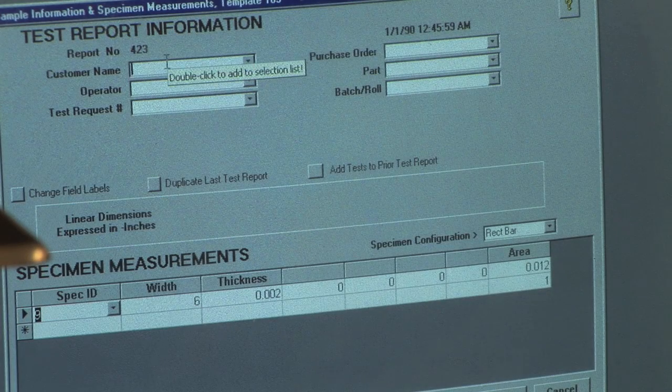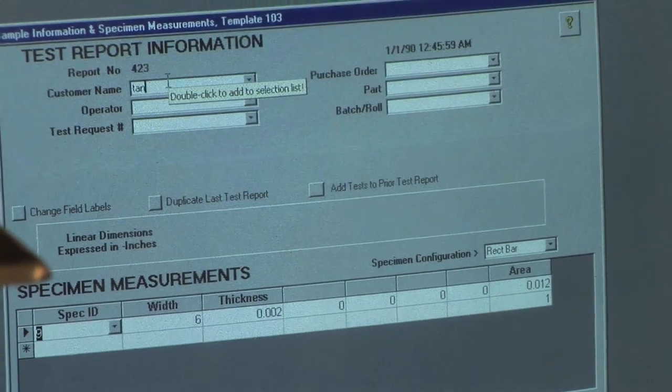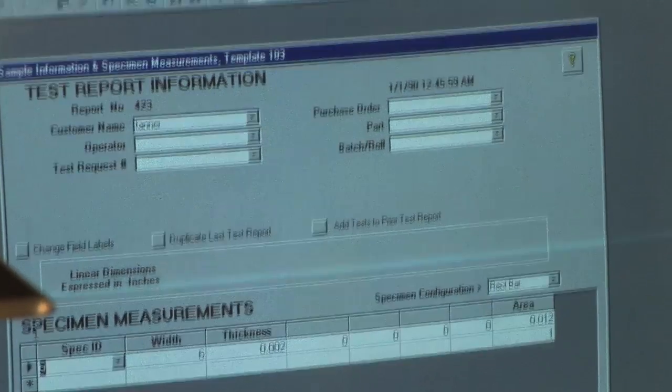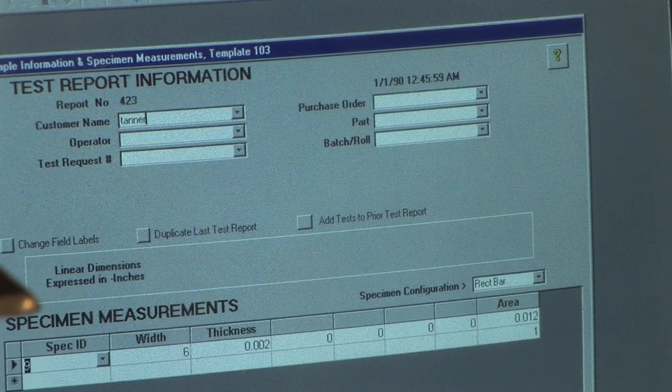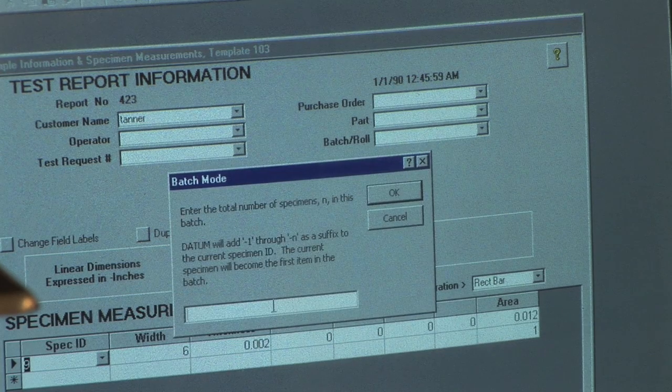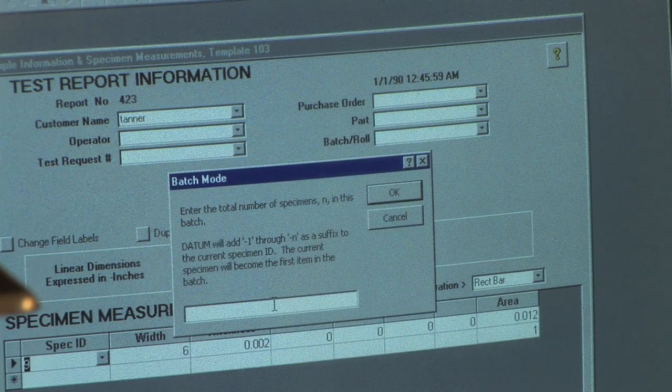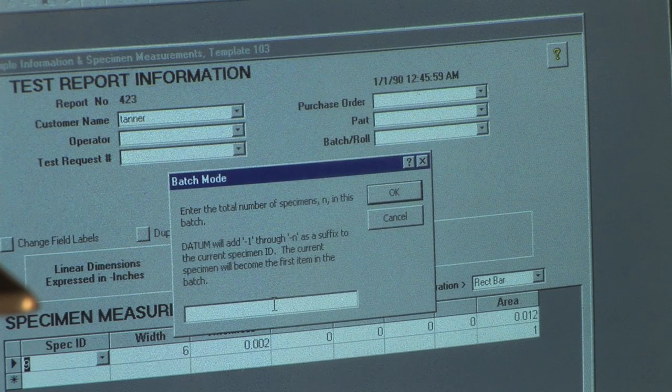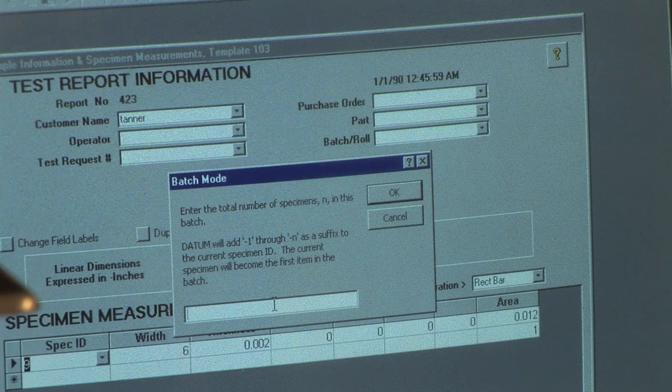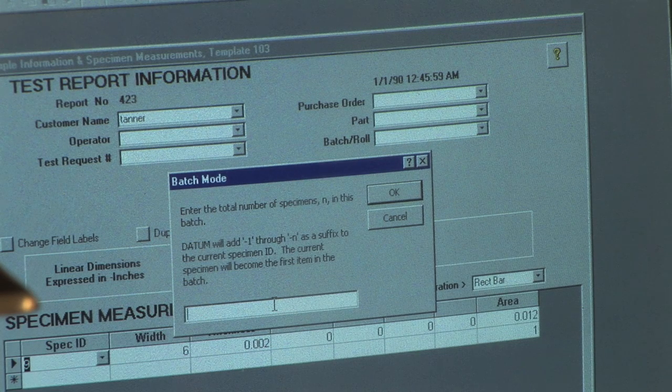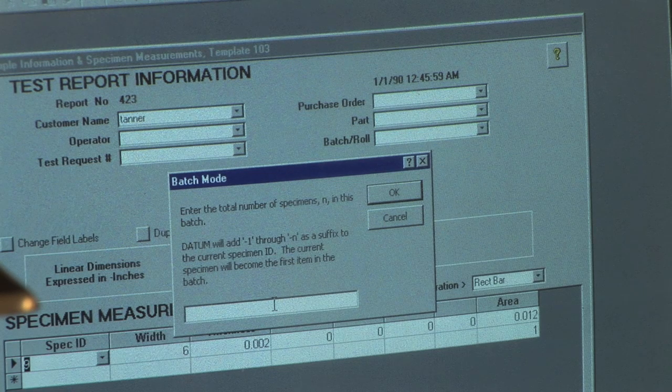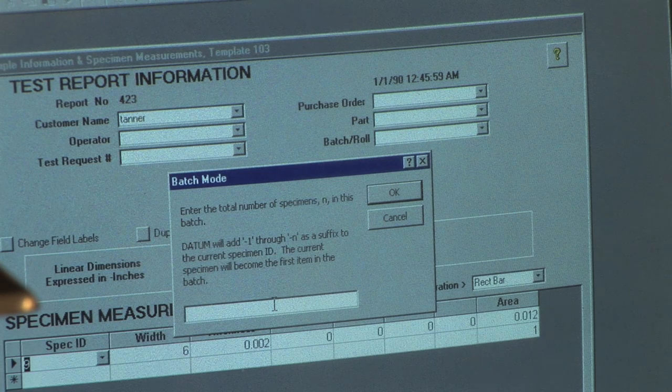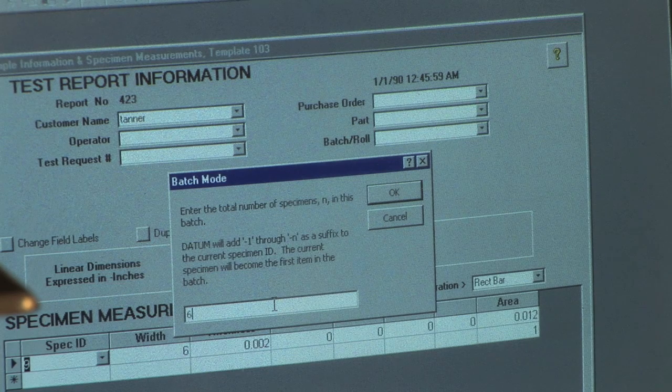Once you get this screen, you're going to go ahead and put in a name. Put in my name just to have a name in there. And then you're going to go ahead and create a batch. Creating a batch, you can only do so many at a time, but it depends on how many samples you're running. And in the batch, the number counts not how many samples you're testing but how many actual cores you have. So if you're doing 10 samples, you're going to have 60 cores. So we're going to create a batch of 60.